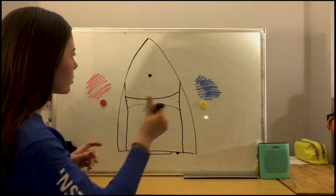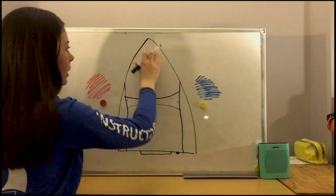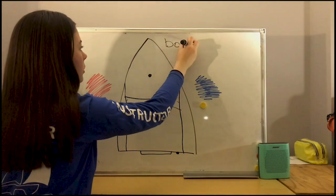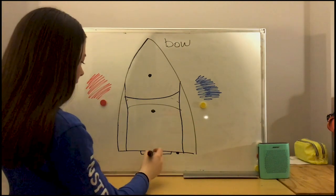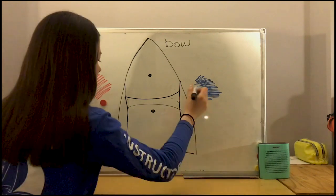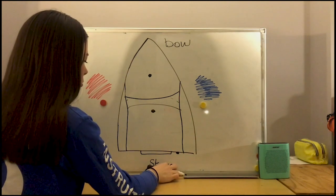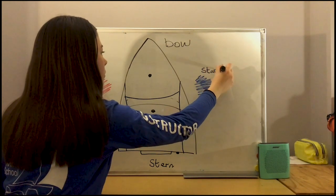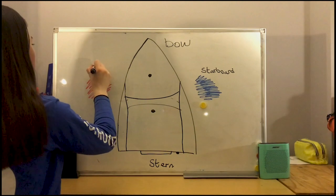And now also, the front of our boat, up the top here, this is called the bow. And then the back of our boat, this whole area here, is the stern. And I'll just write in starboard, and port.